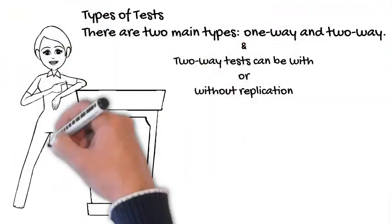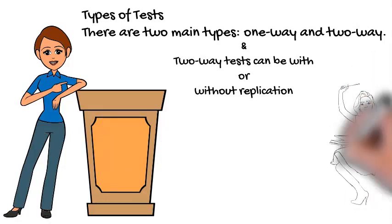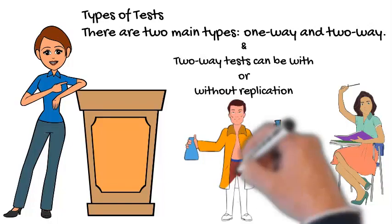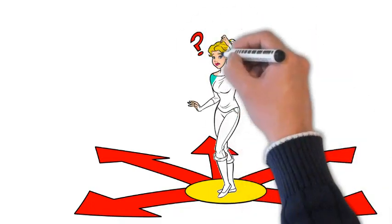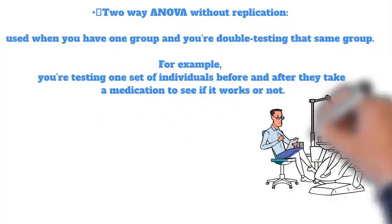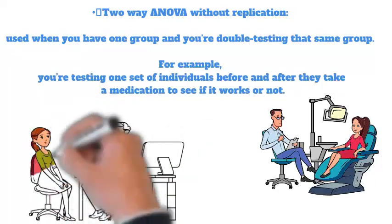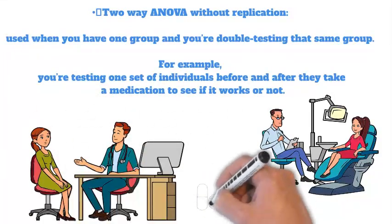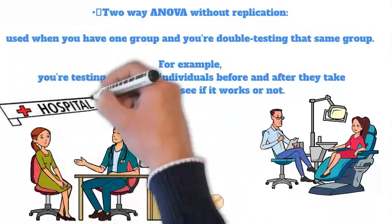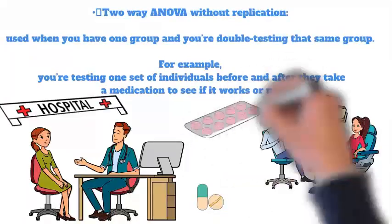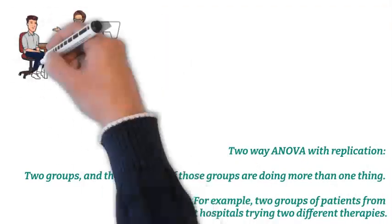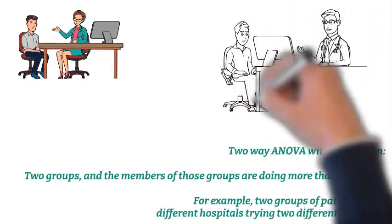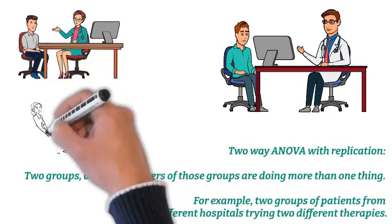There are two main types in ANOVA: one-way and two-way. Two-way tests can be with or without replication. One-way ANOVA between groups is used when you want to test two groups to see if there is a difference between them. Two-way ANOVA without replication is used when you have one group and you are double-testing that same group — for example, testing one set of individuals before and after they take a medication. Two-way ANOVA with replication involves two groups where members of those groups are doing more than one thing — for example, two groups of patients from different hospitals trying two different therapies.